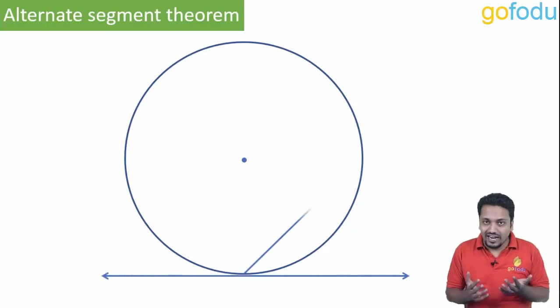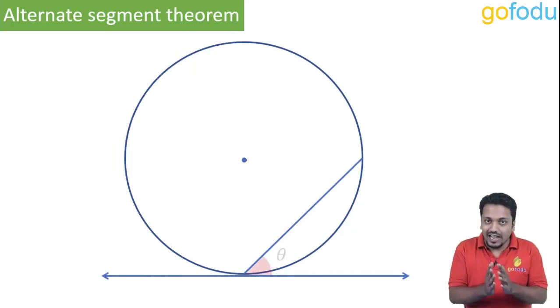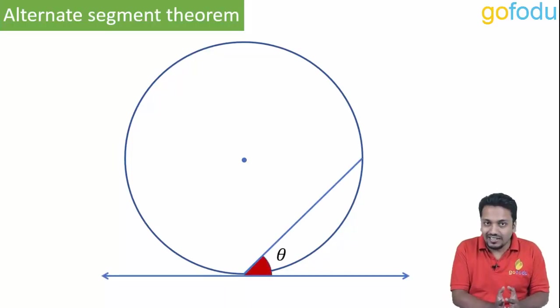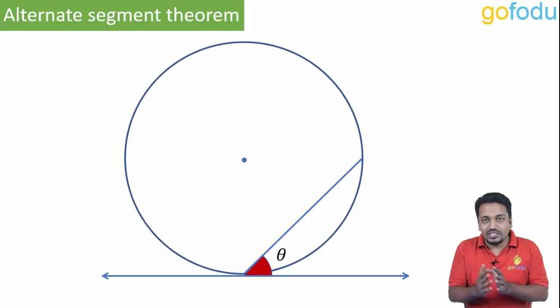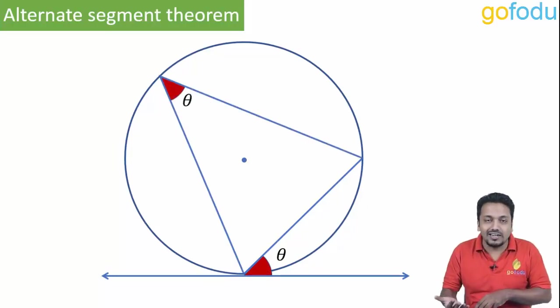We have a tangent and a chord, and this angle theta between them is equal to the angle subtended by the chord at the circle in the alternate segment.